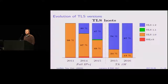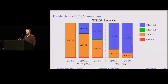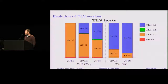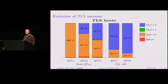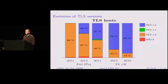Here is a first simple result. This data comes from our campaigns in 2011 and 2014, and the other three — the full IPv4 from 2015, and two regarding the Alexa Top One Million — are from scans.io. You can see that TLS 1.2 is getting attention and is finally being deployed, though don't forget it was a specification published in 2008. So we could have better results, but at least it's starting to be used.